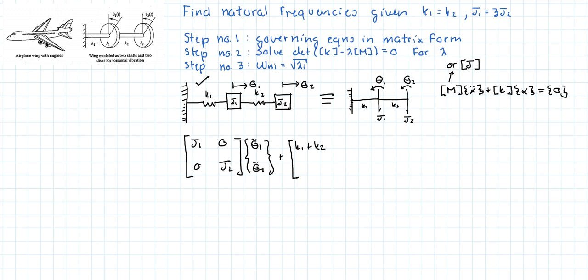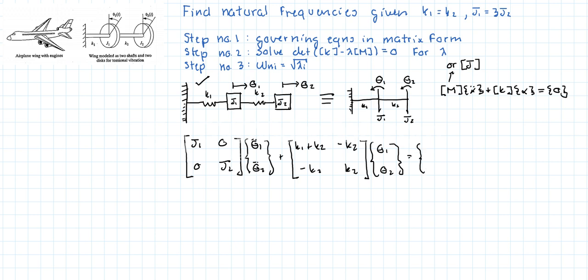The (2,1) entry is minus k2, and the matrix is symmetric, and the (2,2) entry is k2 — the sum of elements attached to the second disc. The full stiffness matrix times the displacement vector equals zero.